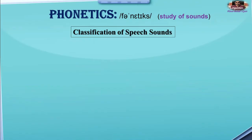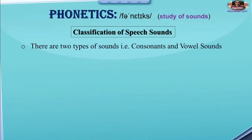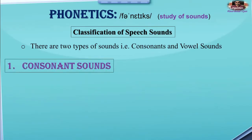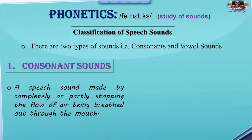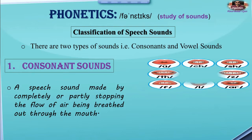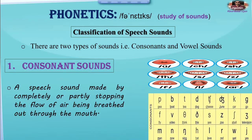Let's talk about our topic: classification of speech sounds. There are two types of sounds — consonants and vowel sounds. Consonant sounds are a speech sound made by completely or partially stopping the flow of air being breathed out through the mouth. These are the positions shown in the IPA chart where all the consonant sounds are given.